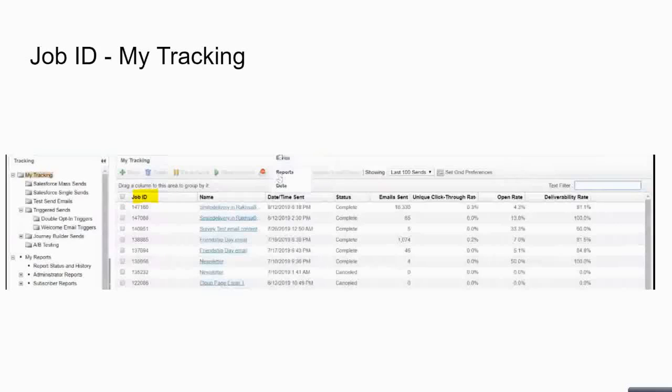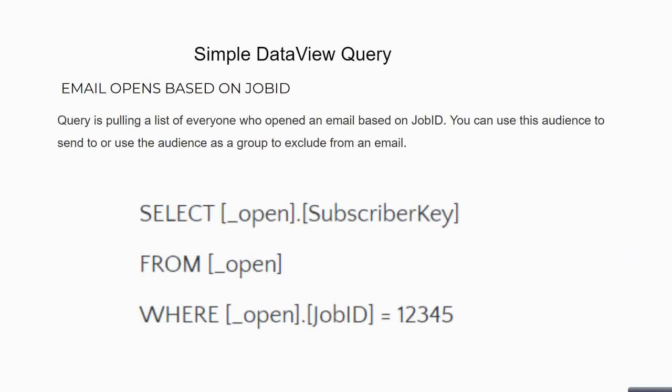Here is an example where, inside a Query Activity, the query is filtering for a particular Job ID — for example, '12345' — and extracting all subscribers who opened that specific email. The results are then stored inside a Data Extension, which you can use to further communicate relevant information to those subscribers.